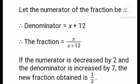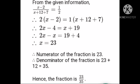Therefore, the fraction is x upon x plus 12. If the numerator is decreased by 2 and the denominator is increased by 7, the new fraction is 1 upon 2. From the given information, x minus 2 upon x plus 12 plus 7 is equal to 1 upon 2. Now, 12 plus 7 becomes 19.